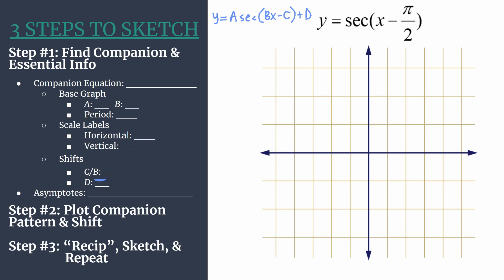Let's jump into step one. Find our companion equation. That's going to be our reciprocal or cosine equation. So simply replace secant with cosine. And then we're going to jump into the analysis. So we're graphing Y equals cosine of X minus pi over two. The first thing for our base graph is identifying A, which is that leading coefficient. So it's an understood one. And that'll help us set our points in our companion pattern in step two.